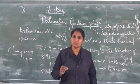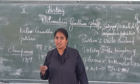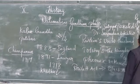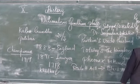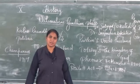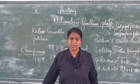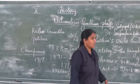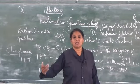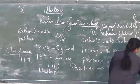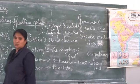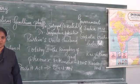Rabindranath Tagore, who wrote Gitanjali and our national anthem, renounced his knighthood award out of anger. A knighthood is an award given by the emperor or empress to a person who has done great work in a particular field. Following that, Gandhiji also returned his award, the Kaiser-i-Hind, which was given for social service.